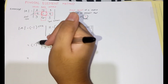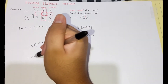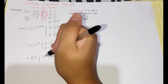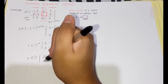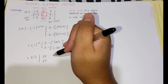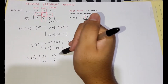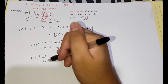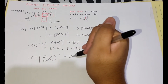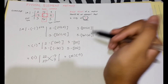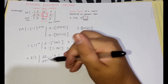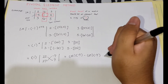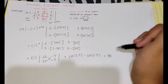Now to simplify: 1 raised to negative 4 is positive 1. So 2 minus negative 20 is positive 22, 3 minus negative 24 is positive 27, 3 minus 10 is negative 7, and 5 minus 12 is negative 7. We cross multiply the elements and subtract their products: 22 multiplied by negative 7 minus 27 multiplied by negative 7. The final answer for the determinant of the 3 by 3 matrix using the pivotal element method is 35.